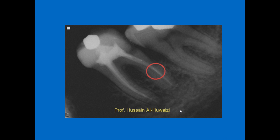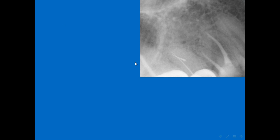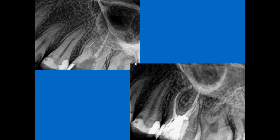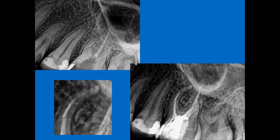This is another case whereby an instrument was bypassed — again, coronal widening is mandatory. This is another instrument that separated in the apical region. Negotiation of the size 8 to the apical area is achieved by coronal widening, a lot of irrigation, and a slight watch-winding motion near the separated area. In another case, the separation was bypassed and a sealer puff is visible, indicating that the obturating material reached the apical area without a problem.